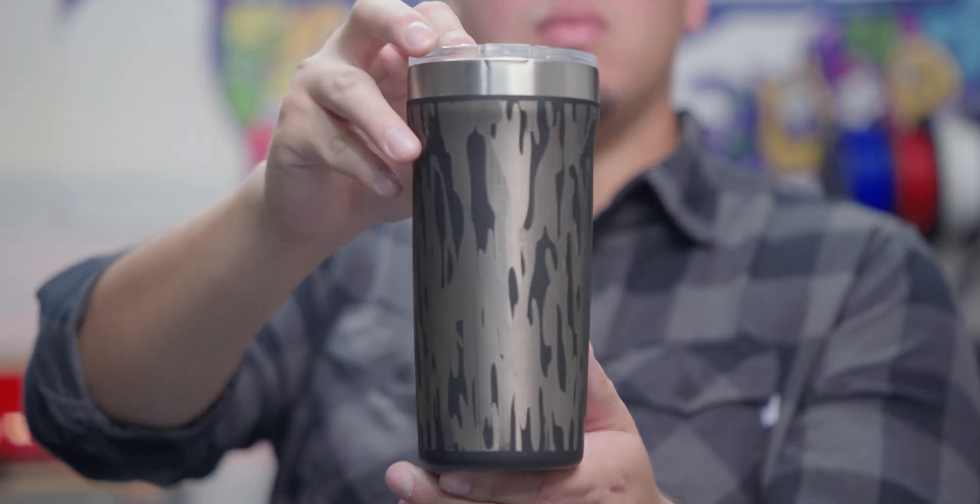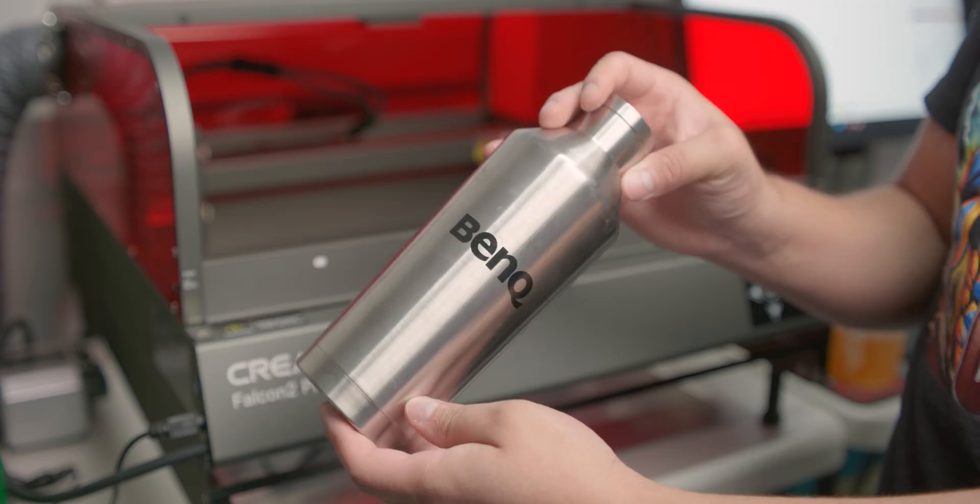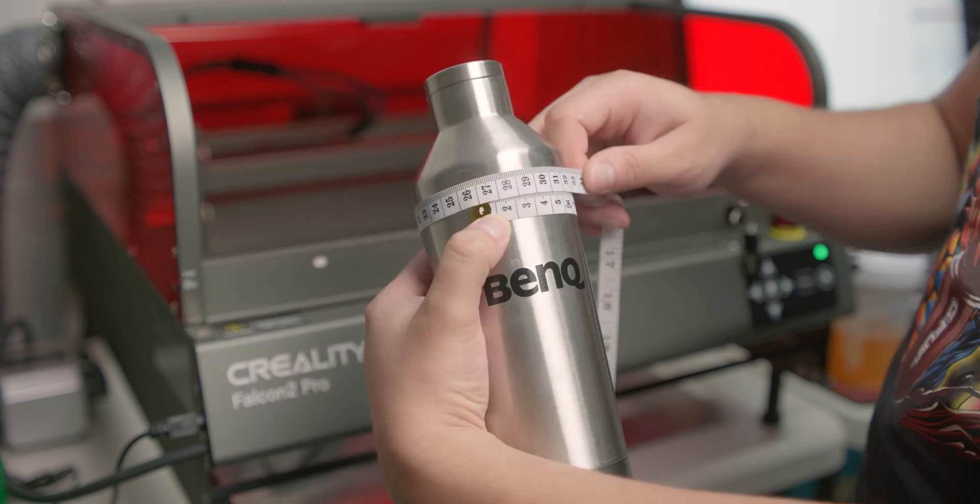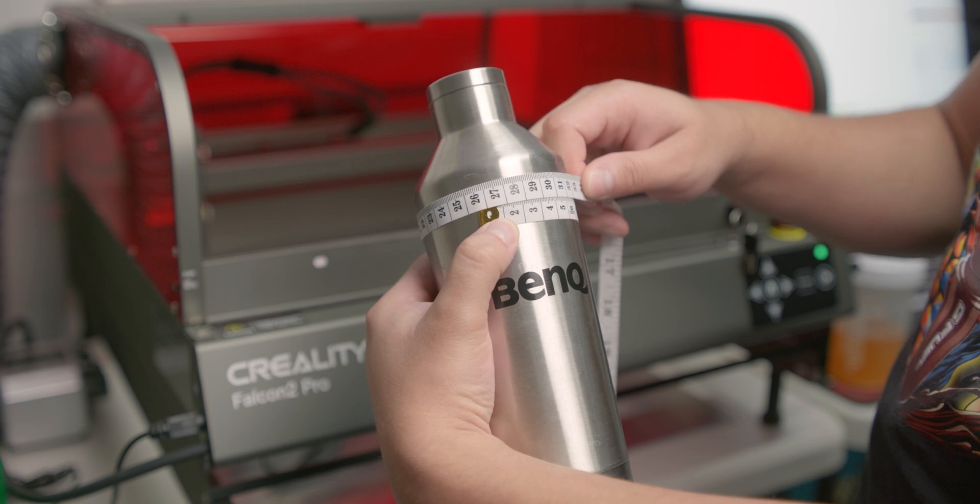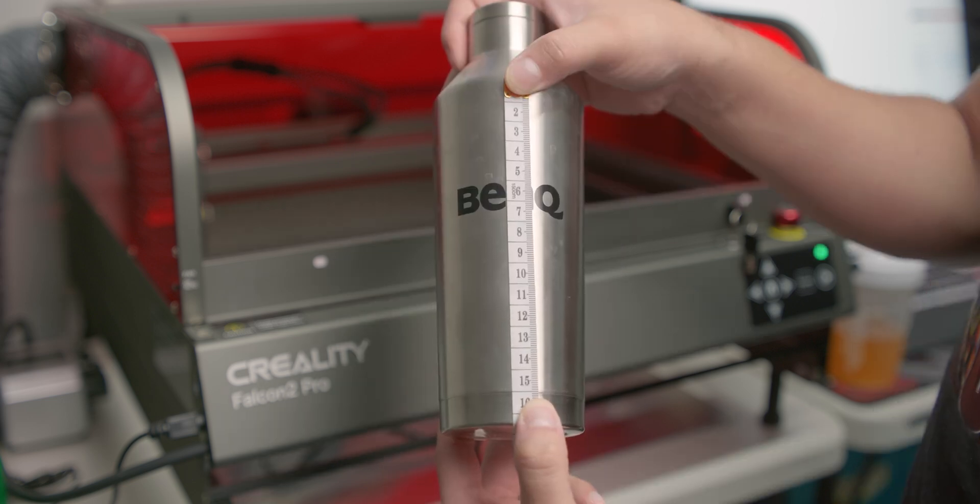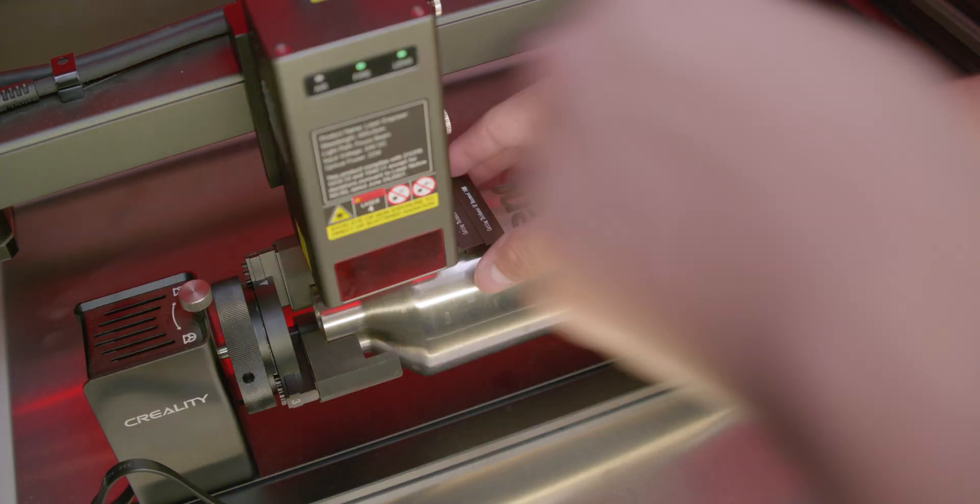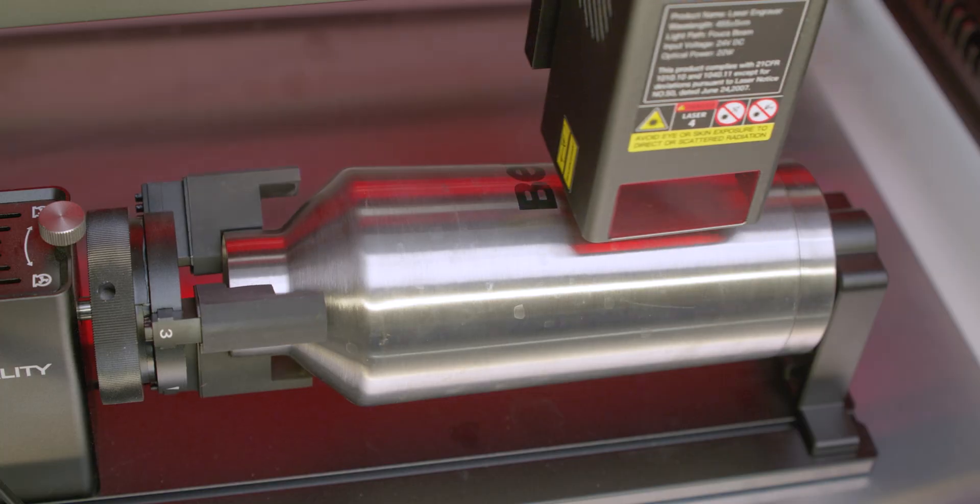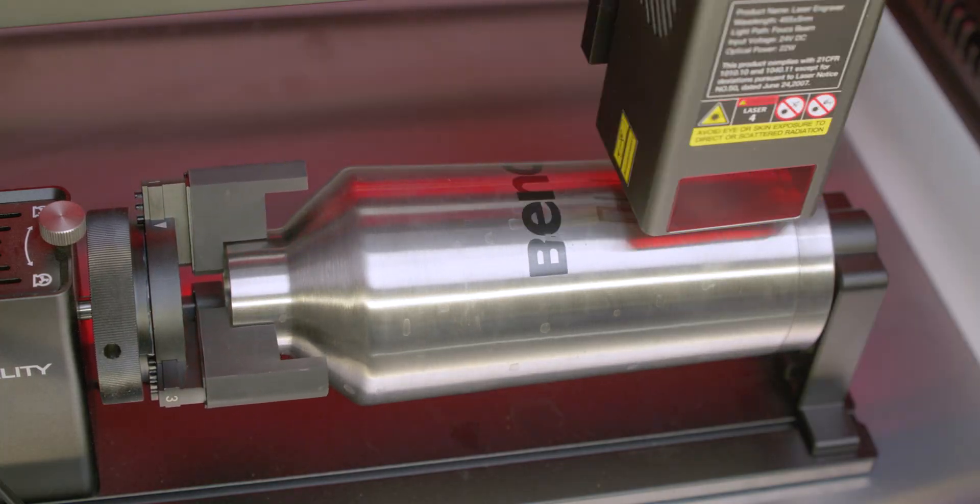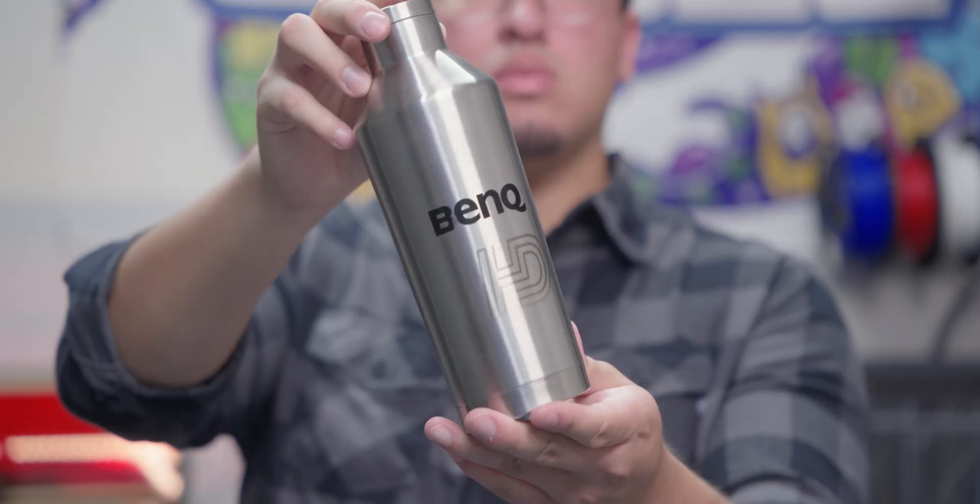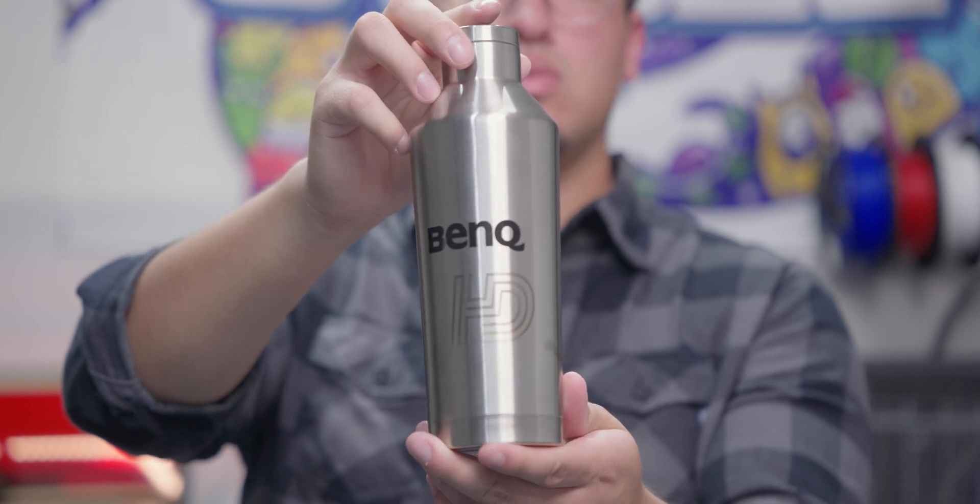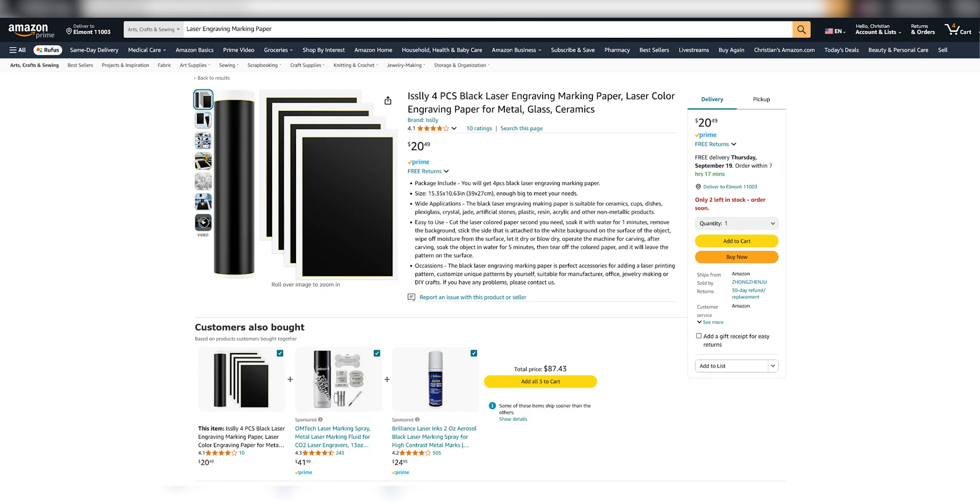The next test was with this BenQ water flask. I wanted to put my logo in the center underneath the BenQ logo, so I measured the circumference at about 26 centimeters and the length at about 16 centimeters. I made my design in Photoshop, imported it, put the measurements into the software, leveled the laser, framed it, and began the test. The logo looked good but may have needed more power, and it was not centered with the BenQ logo—that was my fault. Next time I want to try it with marking paper to have my logo pop more on this type of chrome flask.